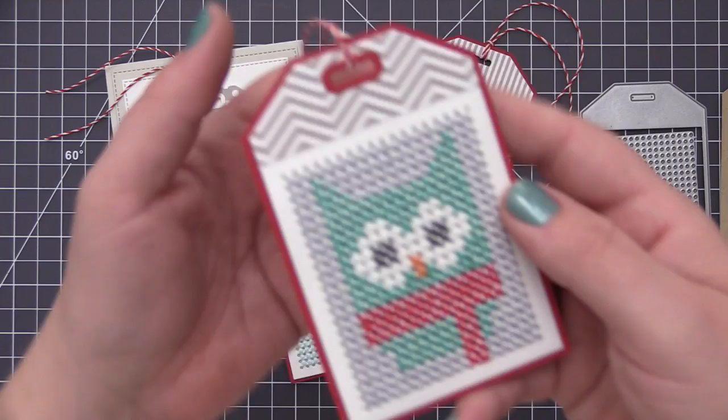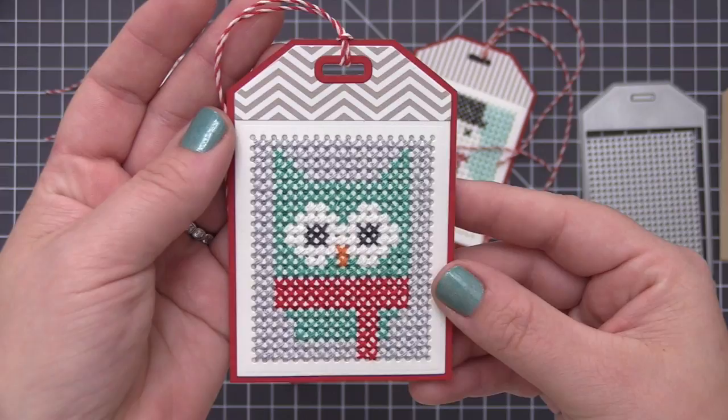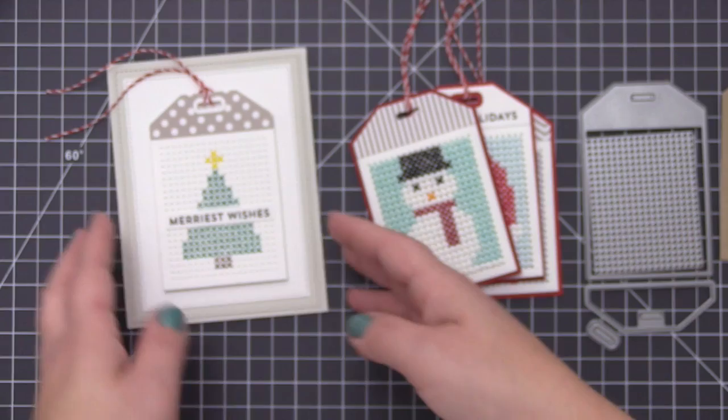I have some examples here of tags I've already created. This is a little tag with an owl image wearing a scarf, dressed up with cardstock and pattern paper. This one has Santa, and this one is a snowman. For all of these images, I created a pattern onto a scratch piece of paper that I could translate onto the tag.